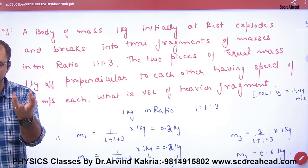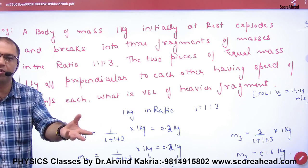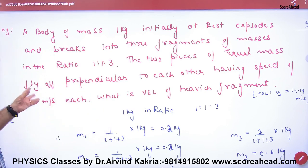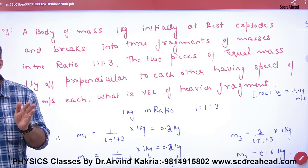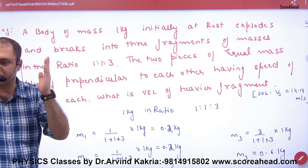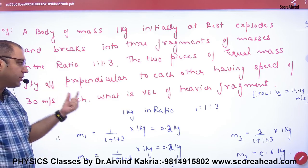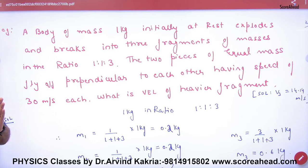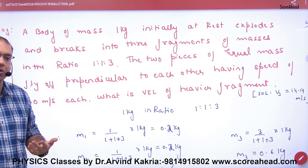So total 1 kg mass is divided into 1 to 1 to 3 ratio. The two pieces of equal mass fly off perpendicular to each other, one along x-axis and one along y-axis, at 30 m/s each. You need to find what is the velocity of the heavier fragment. So where will the third particle go? This theory we have done last time.